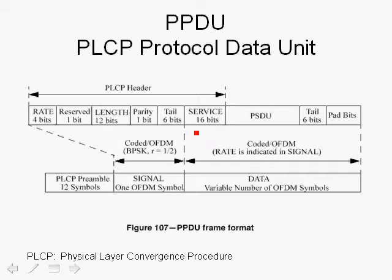Here we show what is actually transmitted by the physical layer. The physical layer first transmits a preamble called the PLCP preamble, which is 12 symbols long. The preamble is used by the receiver for automatic gain control, packet detection, coarse and fine frequency offset estimation and correction, channel estimation and equalization, among other tasks including timing offset correction and fine timing.